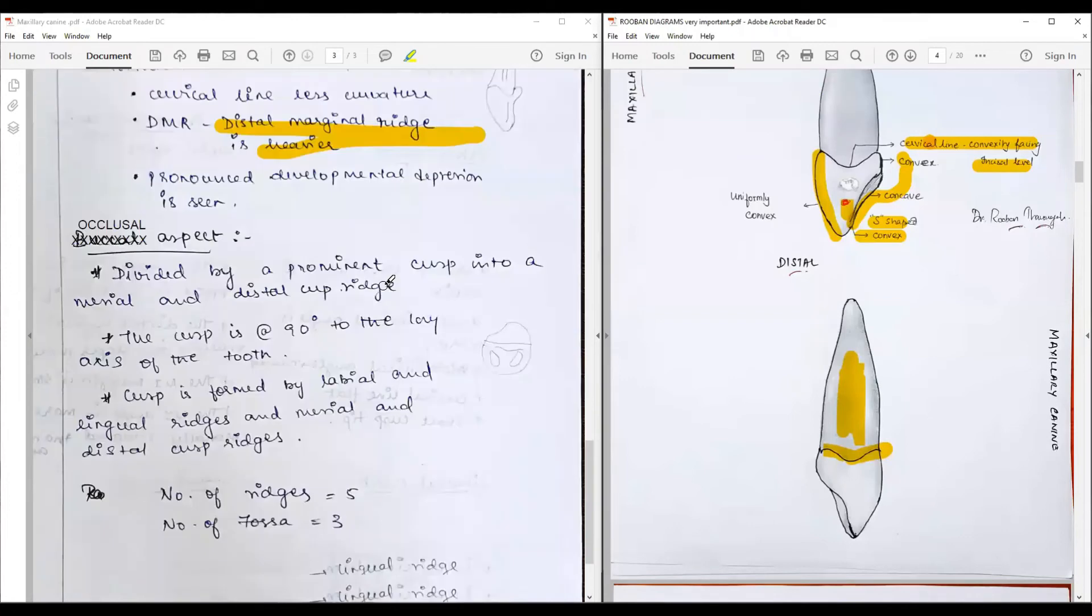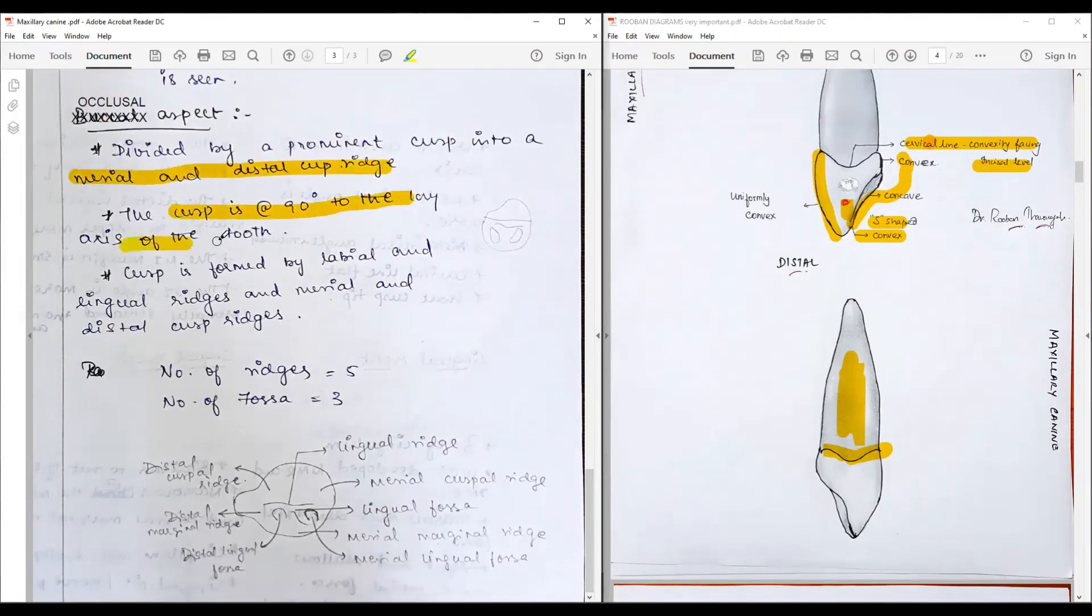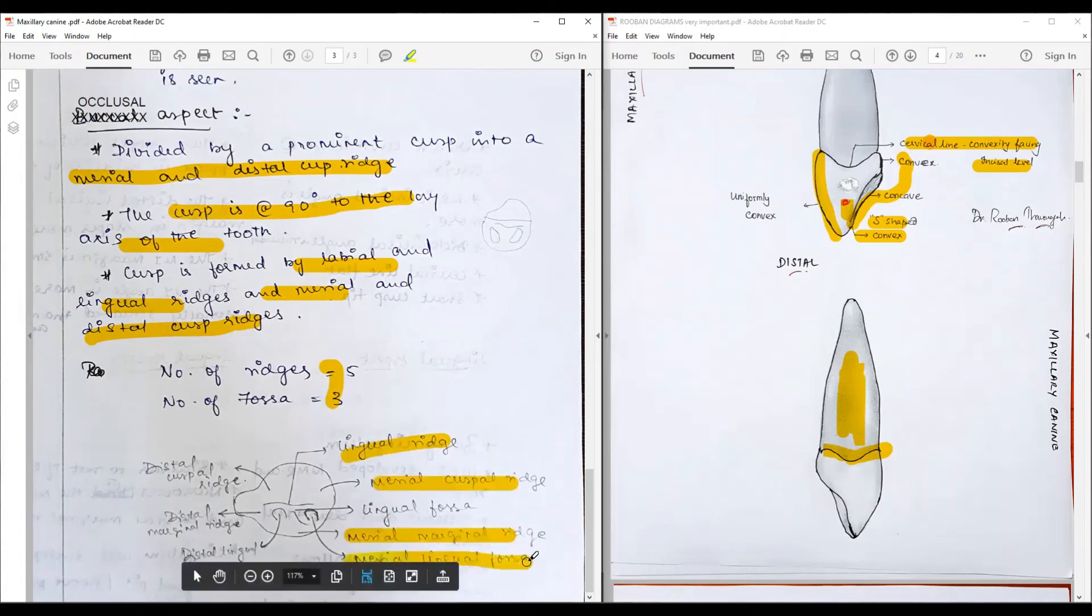The incisal aspect is seen as a prominent cusp made up by the mesial and distal cuspal ridge. The cusp is 90 degrees to the long axis of the tooth and formed by the labial and lingual ridges of the mesial and distal cusp ridges. There are five ridges and three fossae: lingual ridge, mesial cuspal ridge, mesial marginal ridge, mesial lingual ridge, distal lingual ridge, distal marginal ridge, distal cuspal ridge. The lingual fossa is segregated into mesial fossa and distal fossa combining for the lingual fossa. If the lingual ridge is very prominent, it divides into two fossae, mesial and distal.